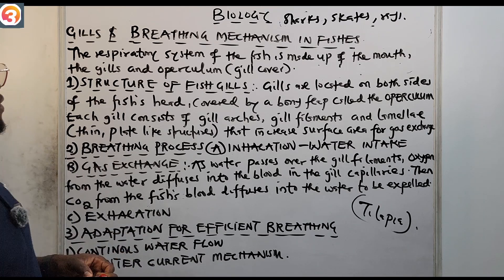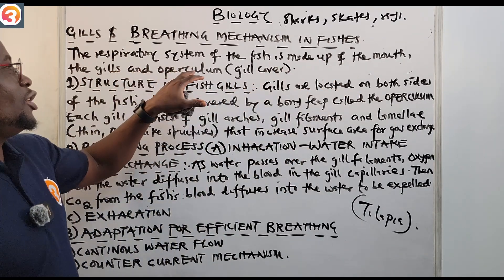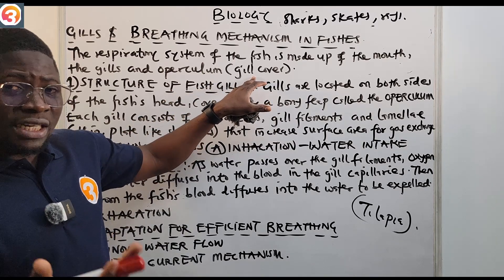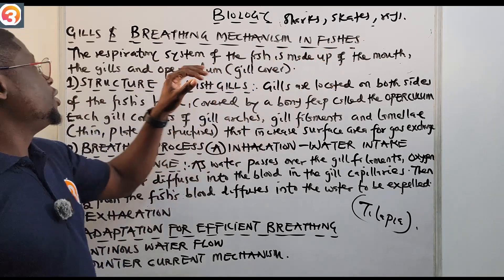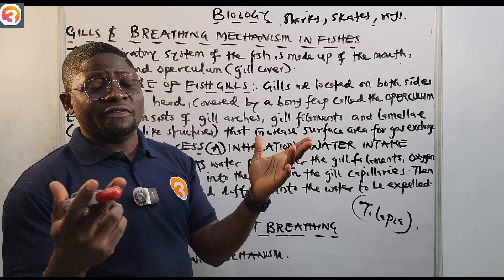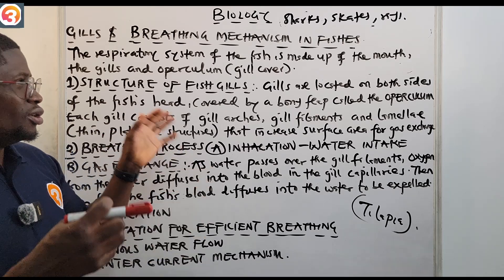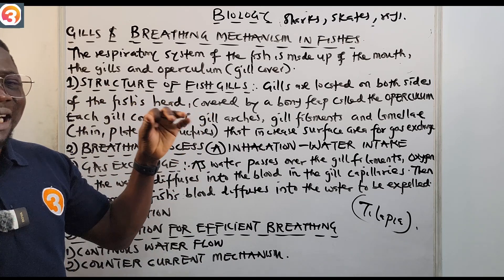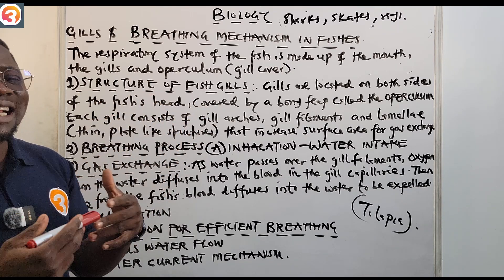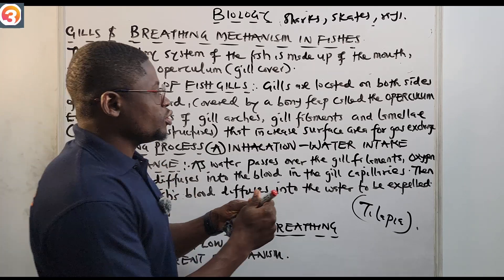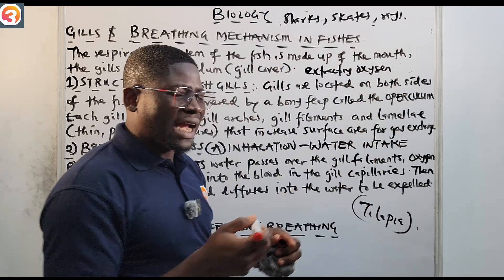Now let us look at the breathing mechanism in fishes. The respiratory system of the fish is made up of the mouth, the gills, and the operculum — which is called the gill cover. The breathing mechanism in fish involves a specialized process of extracting oxygen from water through the gills.